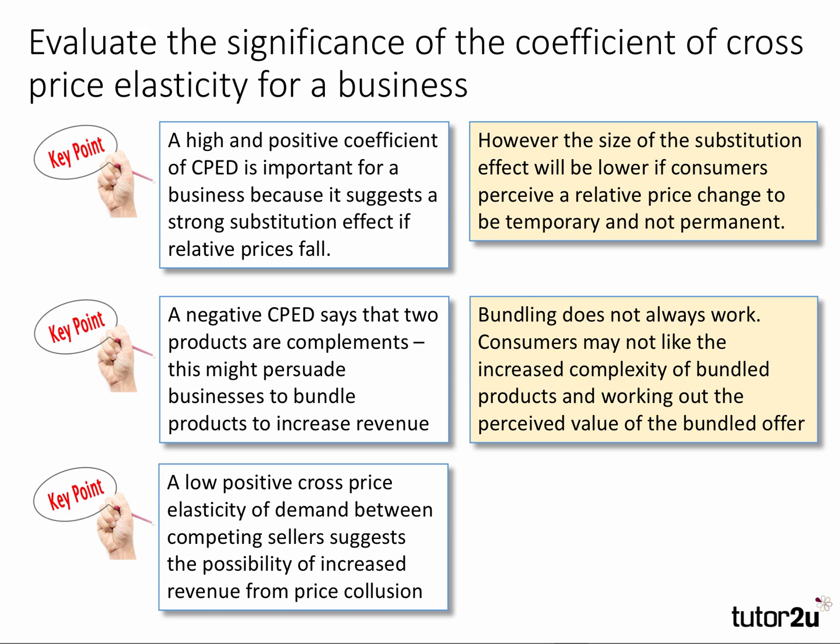A third possible significant point about the coefficient: if you have a low positive cross price elasticity, that suggests competing sellers may actually get better revenue from colluding. Low cross price elasticity suggests the products are weak substitutes, and there may be some gains from price collusion between sellers — bringing in a bit of game theory there.